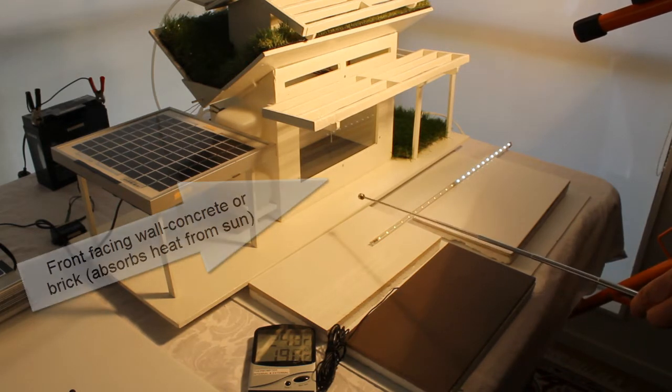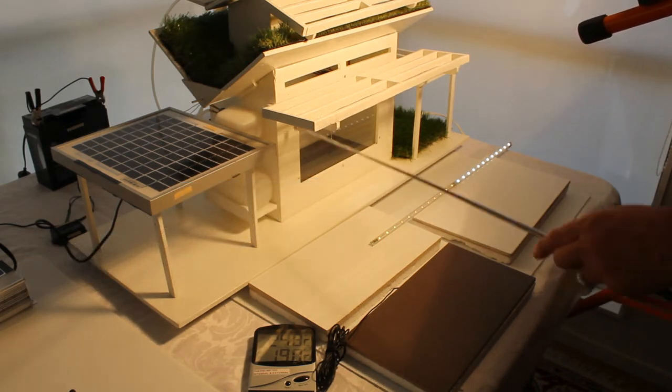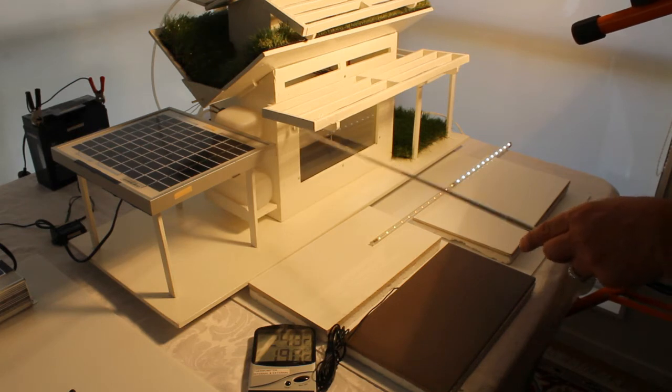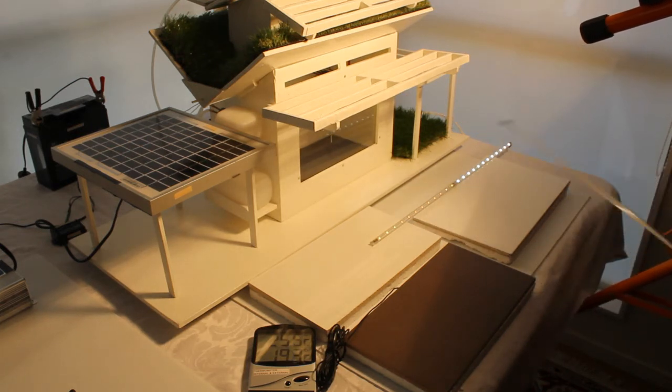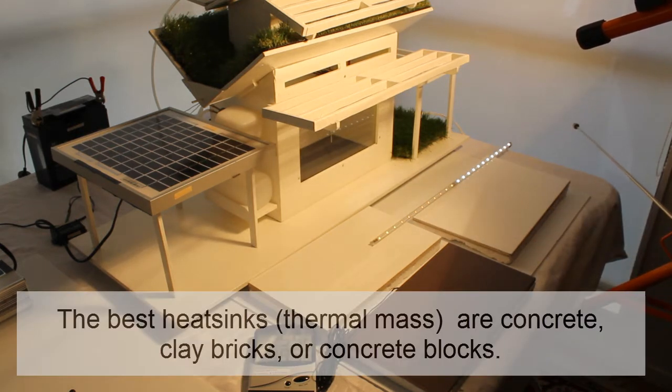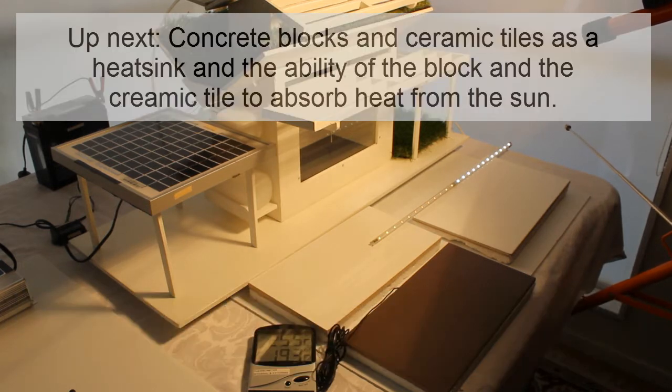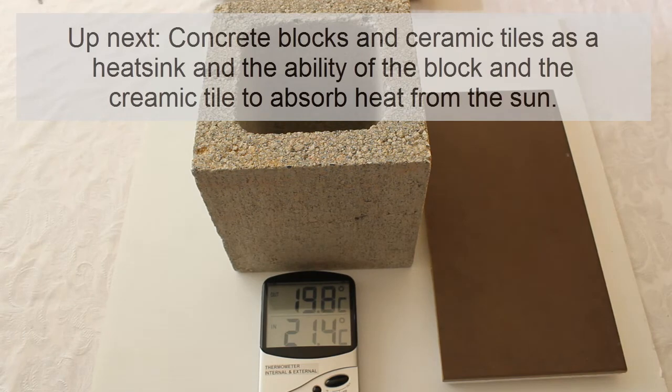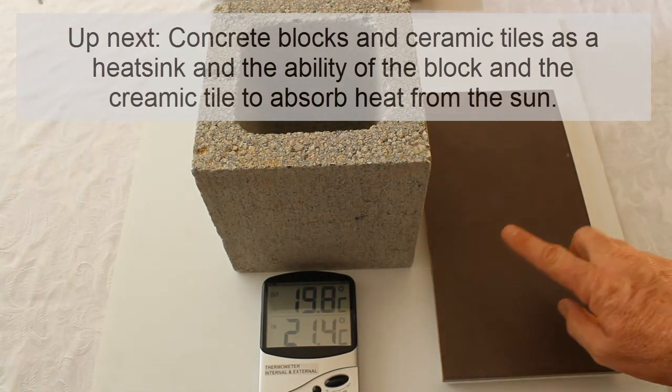In passive solar design you want the walls made of concrete brick or concrete blocks. That's the ideal. I have a concrete block here and a ceramic tile with some polystyrene glued to the back.